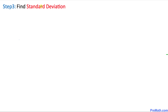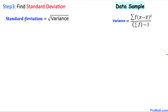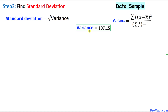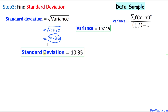Finally, in step 3 we calculate the standard deviation. The standard deviation is always equal to the square root of the variance. Since our variance is 107.15, we take the square root of that value. The standard deviation turns out to be 10.35, and that is our final answer.